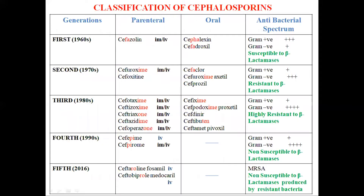The classification of cephalosporins includes 1st, 2nd, and 3rd generation compounds introduced from the 1960s, 1970s, and 1980s. The 4th generation cephalosporins were discovered around the 1990s — Cefepime and Cefpirome — and the 5th generation cephalosporins were introduced around 2016: Ceftaroline Fosamil and Ceftobiprole Medocaryl.